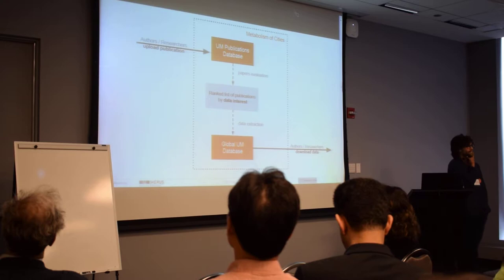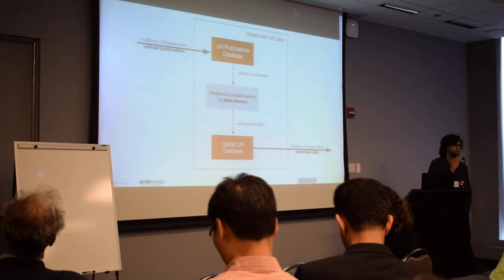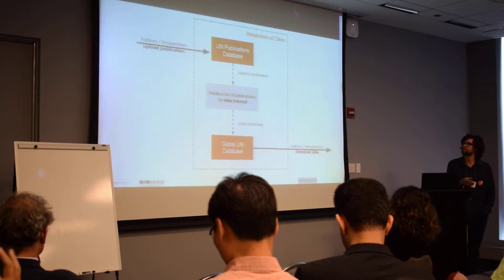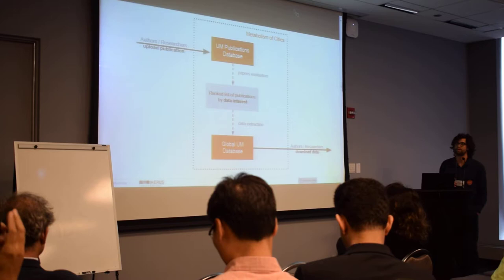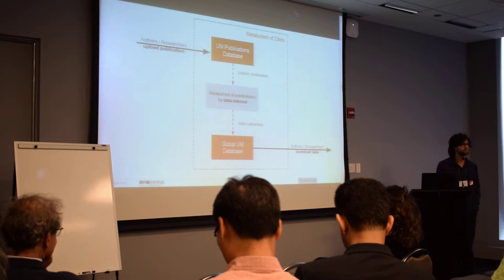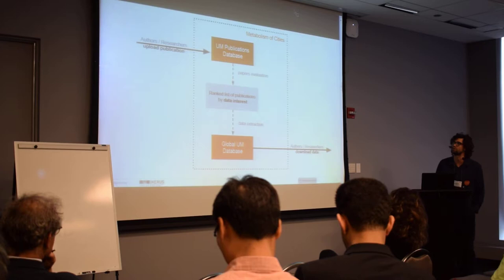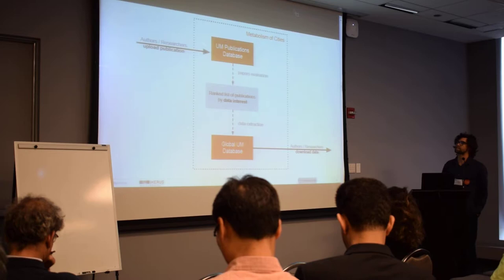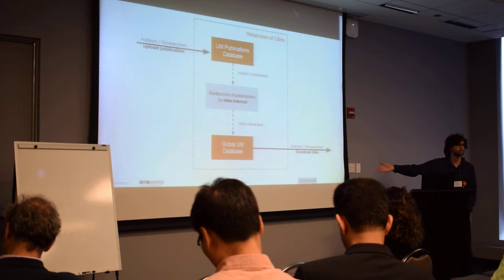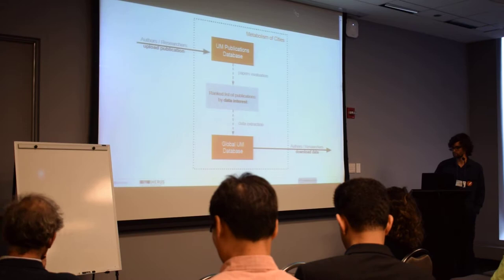The basic process, using a material flow analysis kind of drawing: authors and researchers upload publications with metadata to the website, which goes directly to the publication database. We internally pass through a paper evaluation to rank papers by data interest — this has to do with the amount of data and how new or old the paper is. Then we extract data from those papers either by contacting the author by email, receiving a CSV, or copying and pasting from PDFs by hand to the urban metabolism database. Authors can also upload data directly to the second database. Then authors or researchers can download this data afterwards — it's always open, online, and available to everybody.